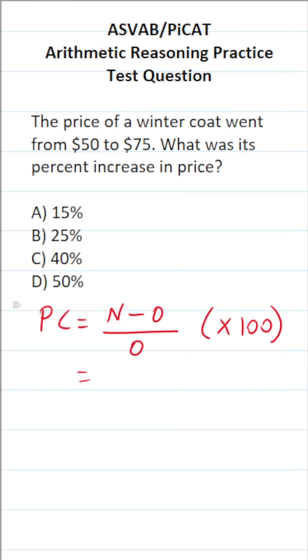Now, what is the new price of this coat? It's $75. So this is 75. What is the old or original price of the coat? It's $50. So this is 75 minus 50 over 50. 75 minus 50, you should be able to do mentally, that's going to be 25 over 50.